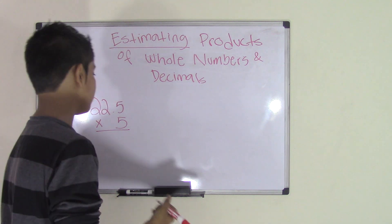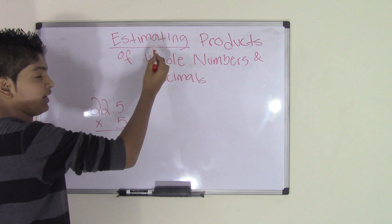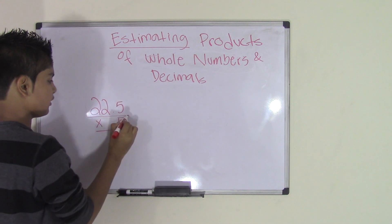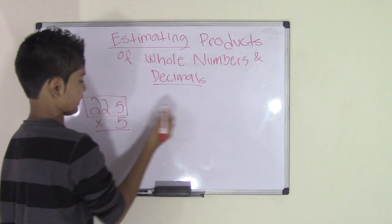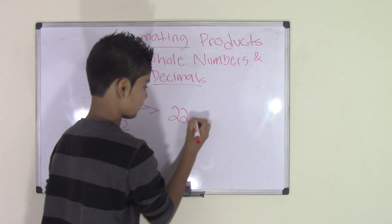What do we do? Well, first we have to estimate. Estimating is different than rounding. So we estimate the number 22.5 since this number is a decimal. So we bring it over here, 22.5.